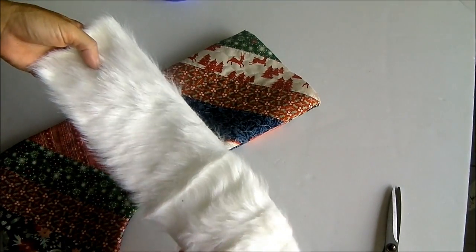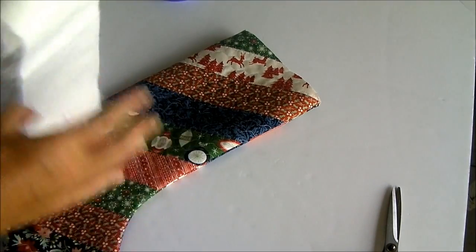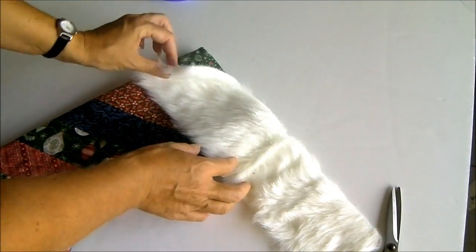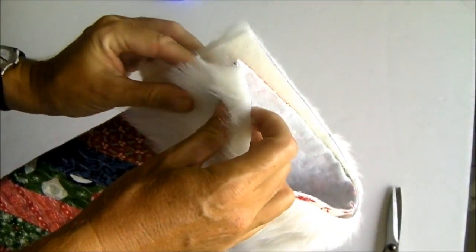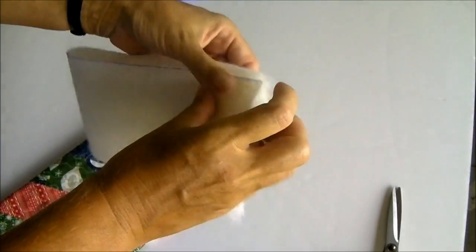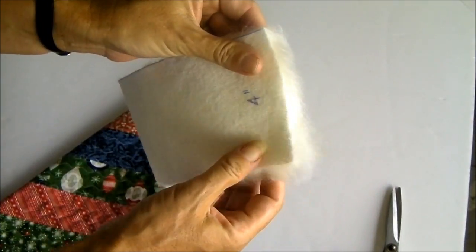Now it's time to add our fake fur strip. I've cut my fake fur four inches wide that's how much I want along the top and then I've just cut a strip which is enough to wrap around the top of my stocking and I'm going to sew it right sides together and just sew a narrow seam along here just to make a tube.